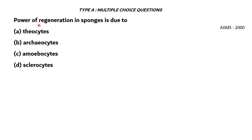Power of regeneration in sponges is due to: A. theocytes, B. archaeocytes, C. amoebocytes, and D. sclerocytes.